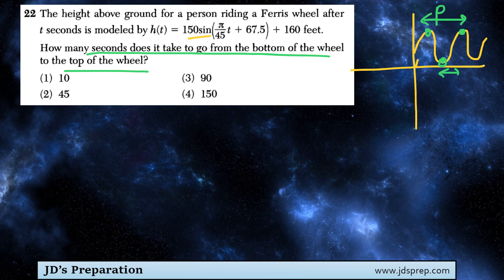So how do we find the period? We use the equation that the period equals 2π over b, where b represents the coefficient in front of the t term here, which is π/45.